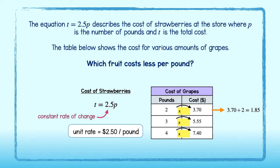3.70 divided by 2 is equal to 1.85. The same is true for the rest of the values. This means that if I multiply the x values by 1.85, then I will get the corresponding y values. 1.85 is the constant rate of change, and therefore, my equation is y equals 1.85x, and the unit rate for the cost of grapes is $1.85 per pound.